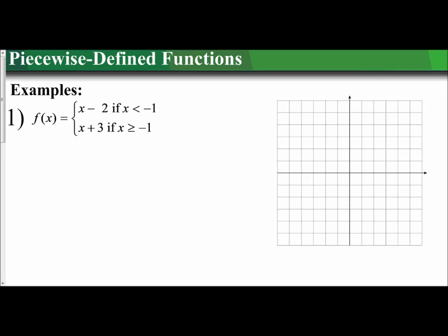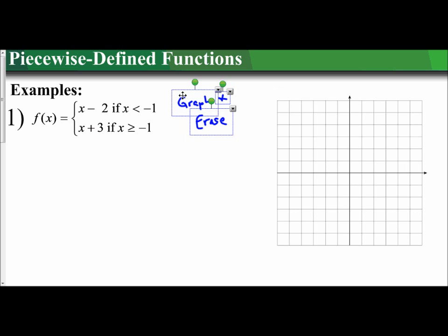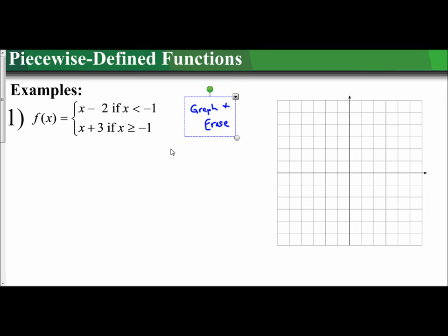In the following video, we're going to examine how to graph piecewise-defined functions. We're going to use the graph and erase technique. What that allows us to do is graph each portion of the function — each piece — and then erase the part that does not satisfy the conditional boundaries set forth in the piecewise function. Make sure you are using a pencil when graphing these, since you have to erase.